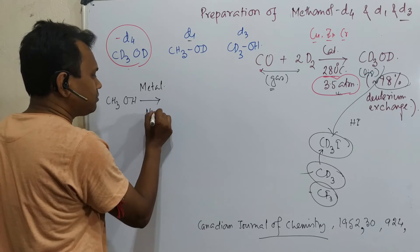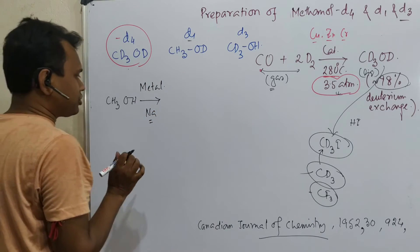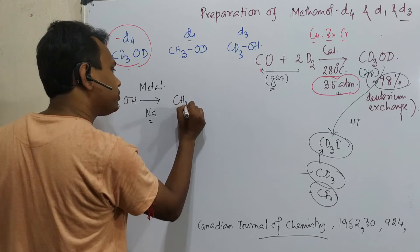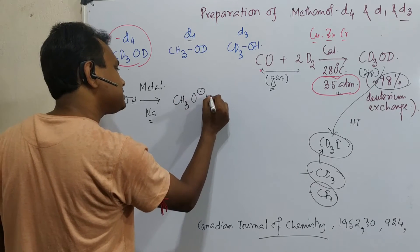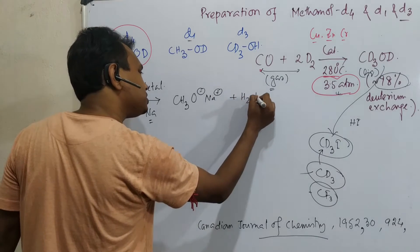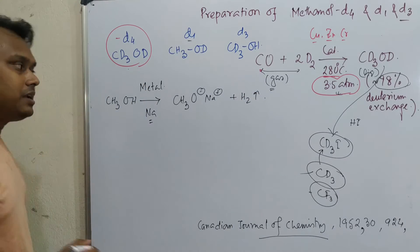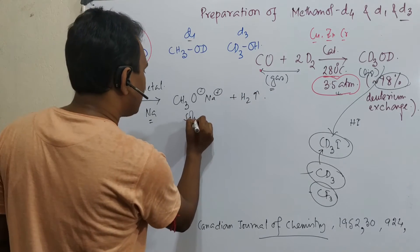Metallic sodium or lithium, what it will produce? CH3O minus Na plus, plus hydrogen. And this hydrogen will come out from the reaction mixture.